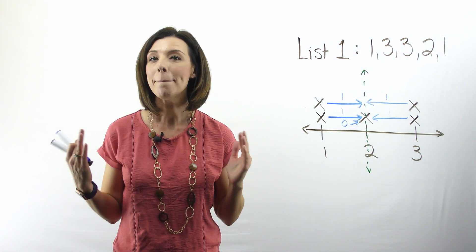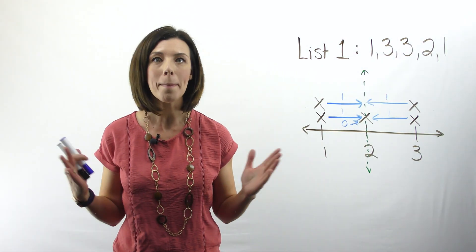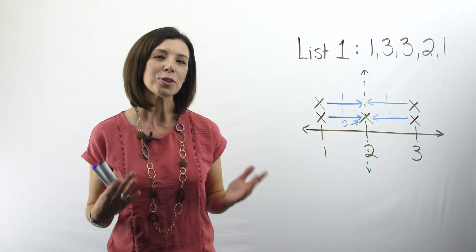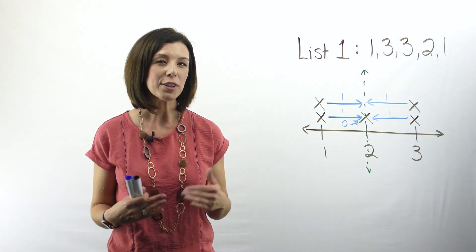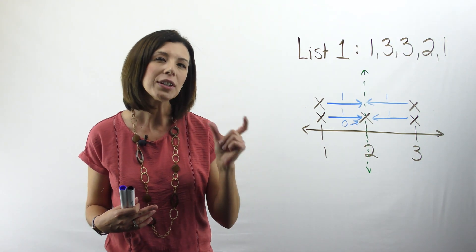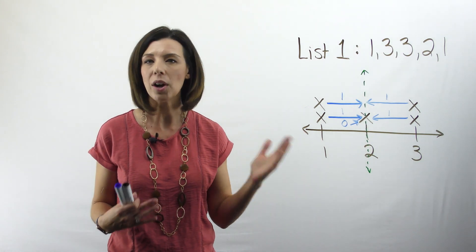Now let's talk about the mean absolute deviation, or MAD. When we're trying to find the mean absolute deviation, it's really a fancy way of saying, what's the average distance that the data points are away from the mean?